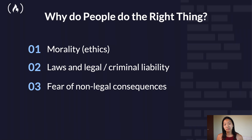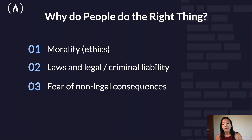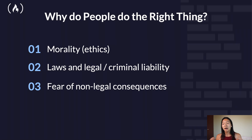So why do people do the right thing? Well, first of all, there is an aspect of morality or ethics. What are ethics? Ethics are the rules that we all voluntarily follow because it makes the world a better place for all of us. They are the cornerstone of civilization. Ethical principles stop me from stealing your car. Laws also stop me from stealing your car since I could get caught and put in jail. However, there are also non-legal consequences that are a factor — I might be unsuccessful and you would beat me up.